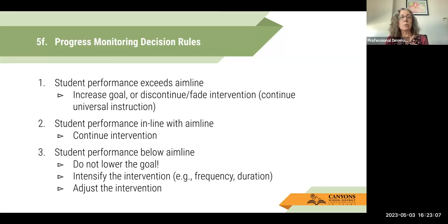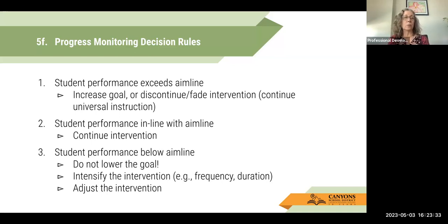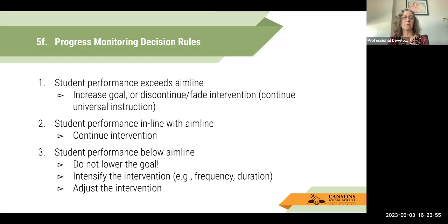Here are some progress monitoring decision rules. The first — and best — scenario is that the student's performance exceeds the aim line. They're making great progress, so we might want to increase our goal, discontinue or fade the intervention, or both. We would continue universal instruction, but adjust the goal or begin fading the intervention. If the student's performance is in line with the aim line, continue the intervention because it's effective. However, if the student's performance falls below the aim line, we don't want to lower the goal — we want to intensify the intervention, looking at frequency, duration, group size, and motivation, then reassess whether those adjustments lead to improvement.